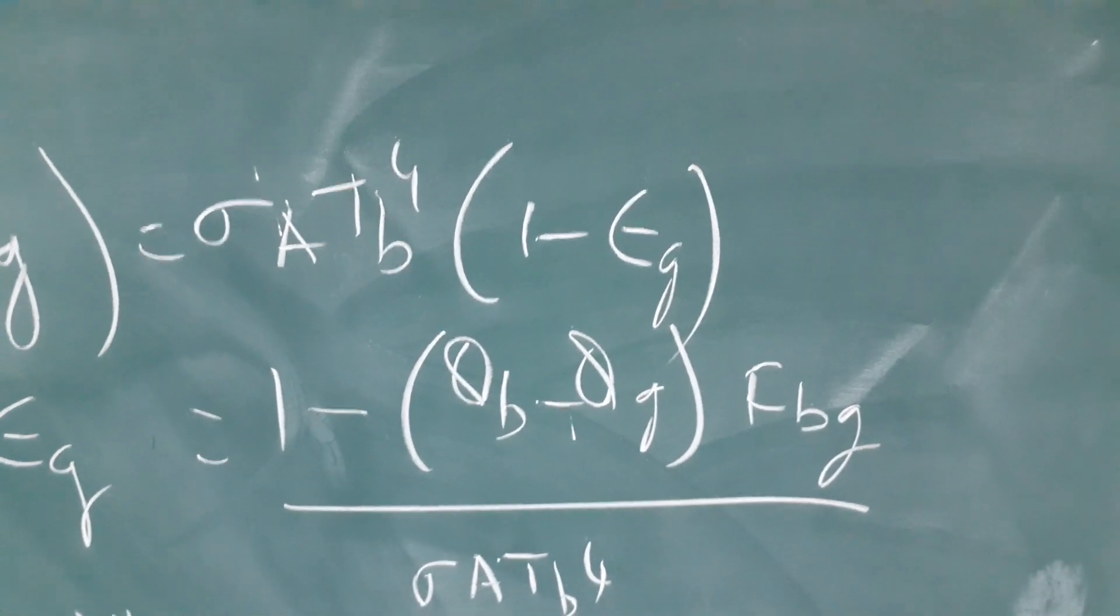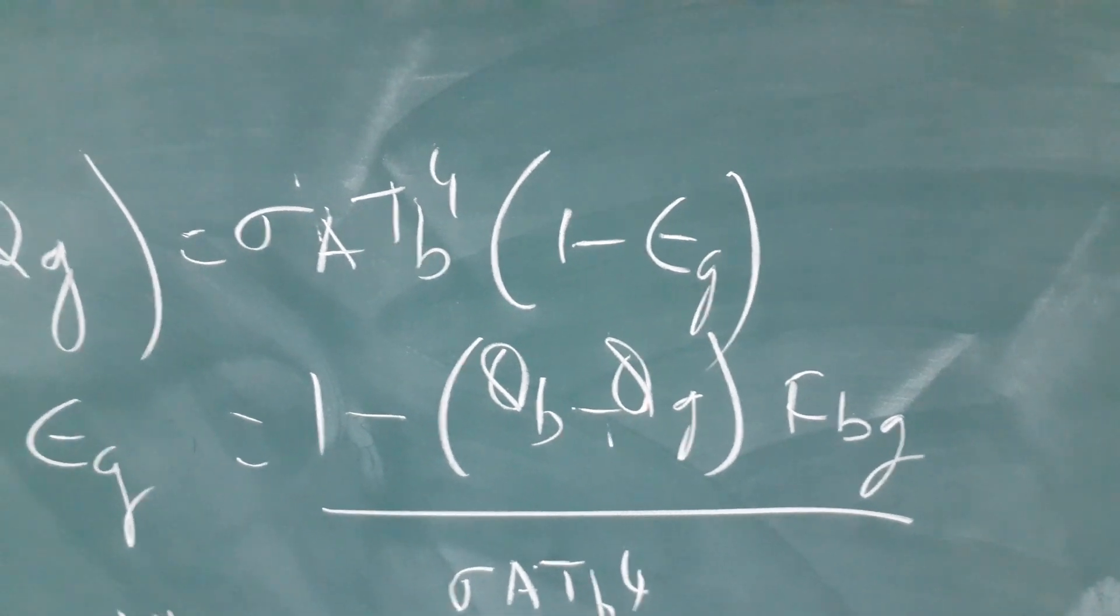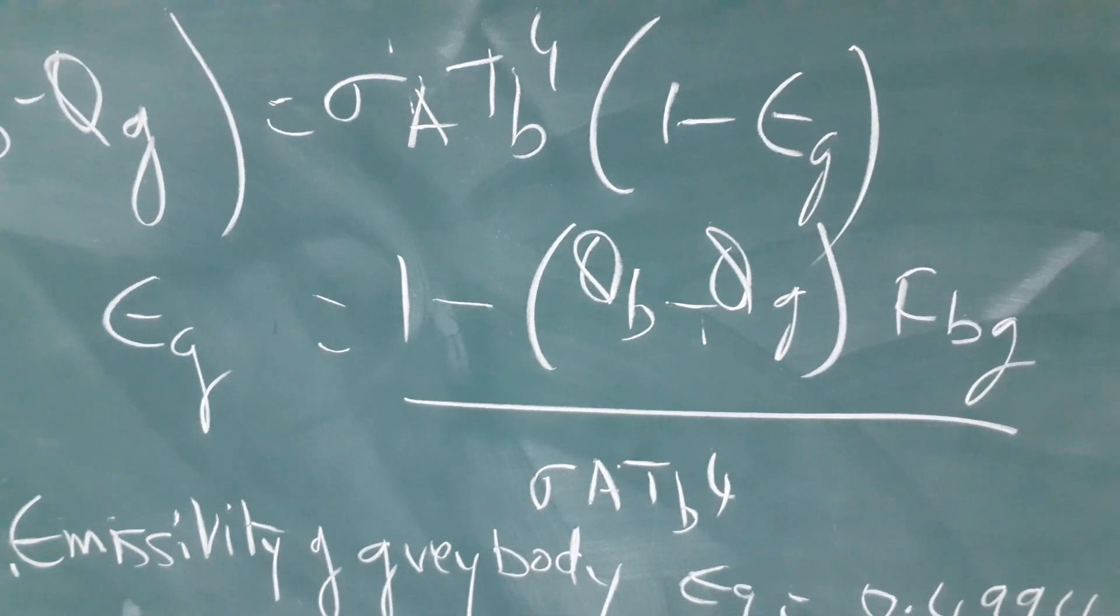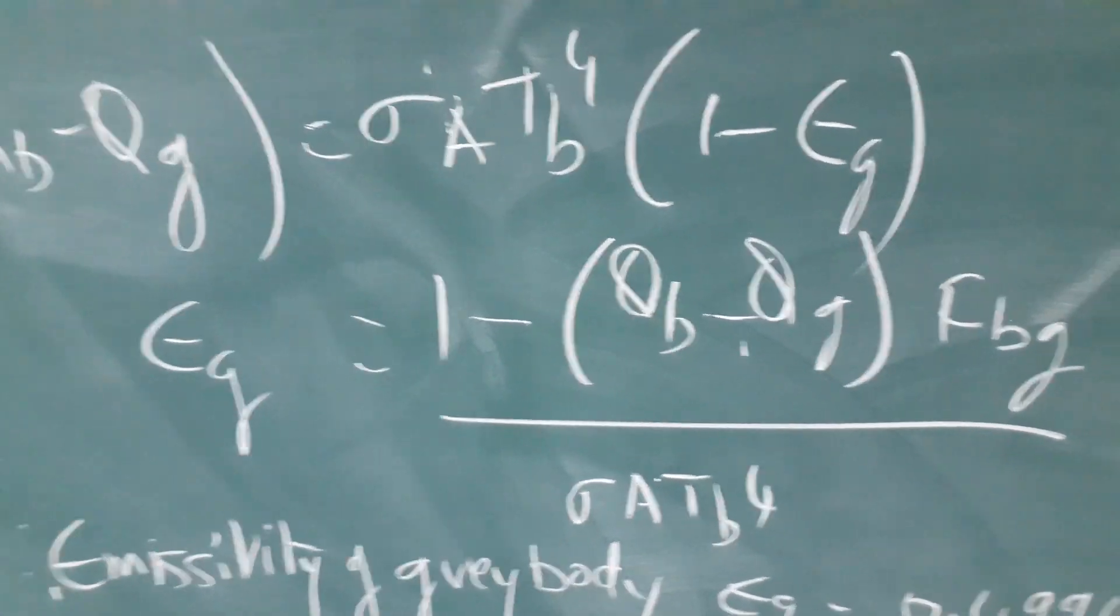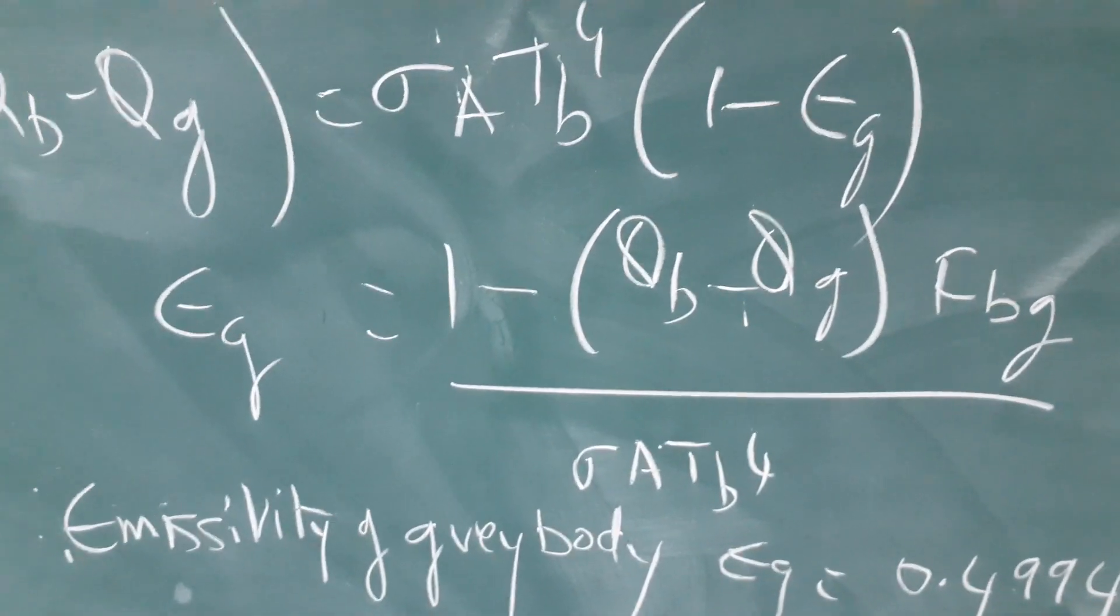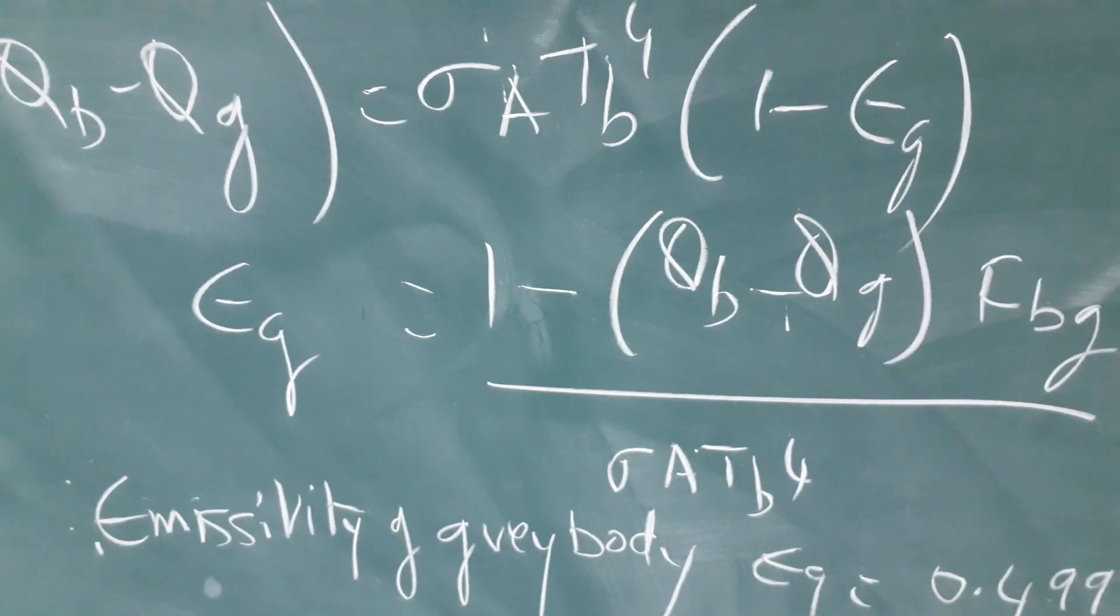What is that? Radiation shape factor. Okay, FB or FBG you can take, which is equal to 0.86 divided by sigma A into temperature of black body to the power of 4. Remember, the temperature is in Kelvin, not centigrade. Okay, so TB to the power of 4.